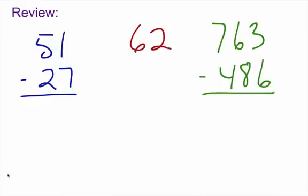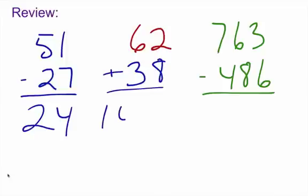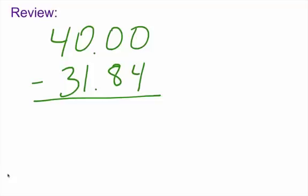$51 minus $27 — we should know this. We're going to bring that $27 up to $30. We subtract $51 minus $30, which is $21, and we add those 3, so that's going to be $24. Now, $62 plus what will give you $100? We should get $38 — that gives you $100. So let's do this one here. $763 minus $486 — we're going to go up to $500, and we have to go up $14 to get to $500. So that's going to be $763 minus $500, which is $263. And we went up $14, so that's going to give us $277.